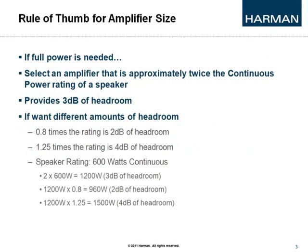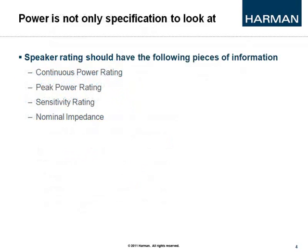There are a couple of rules of thumb for amplifier size. First, decide if full power is needed — we'll look at an example shortly. Typically you want an amplifier that's twice the continuous power rating of the speaker, which provides 3 dB of headroom. There are sometimes cost constraints, so other solutions include 0.8 times the rating for 2 dB of headroom, or 1.25 times the rating for 4 dB of headroom, giving more room for peaks to pass through the system.